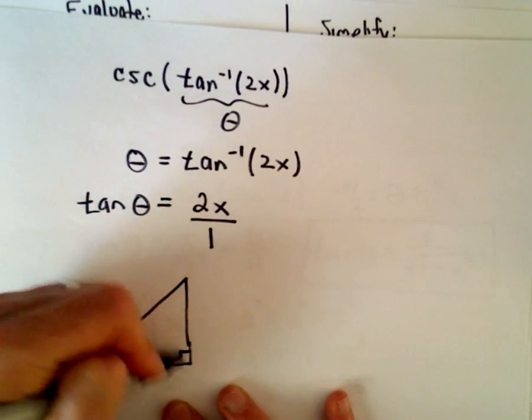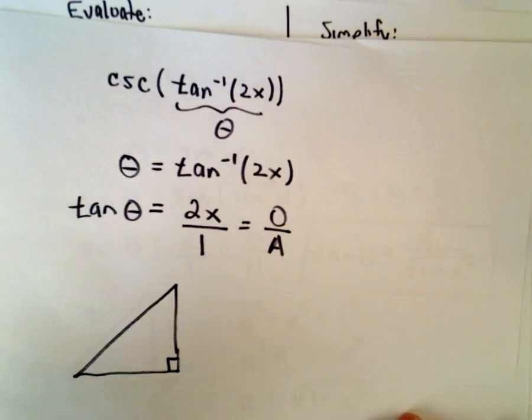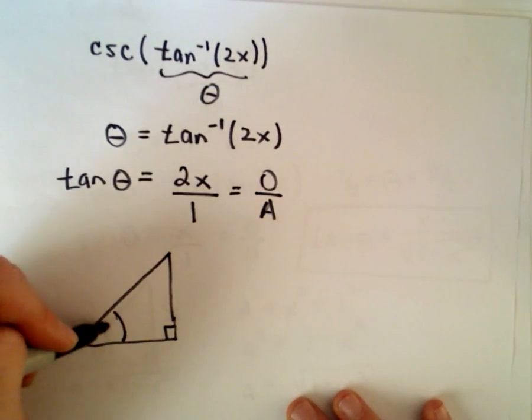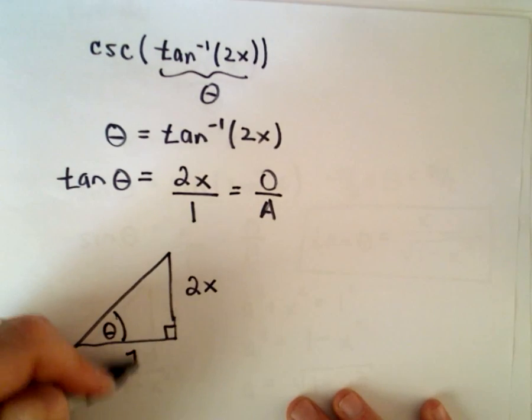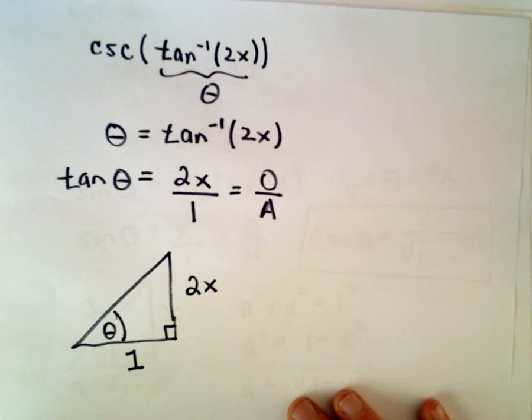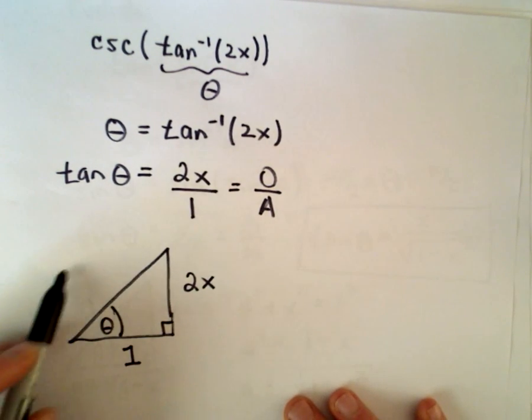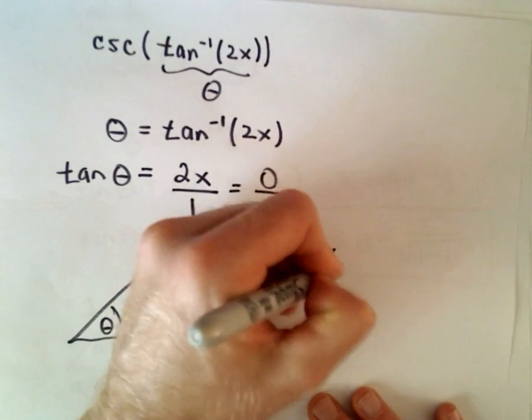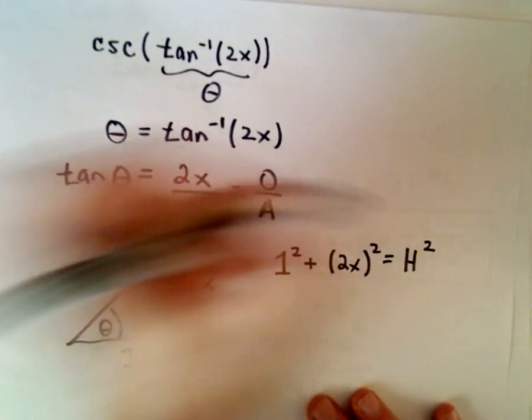I'm going to put that over 1. Let's do our right triangle. So again, tangent, remember, is the opposite to the adjacent - the ratio of the opposite side to the adjacent side. So there's theta. The opposite is 2x, the adjacent is positive 1. Again, we're going to have to use Pythagorean theorem to figure out the missing side. So 1 squared plus 2x squared is going to equal the hypotenuse squared.